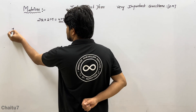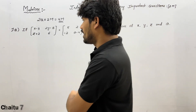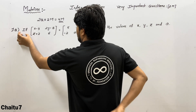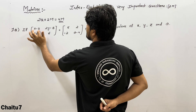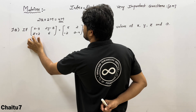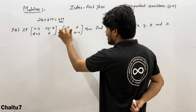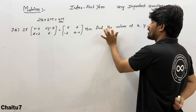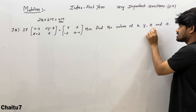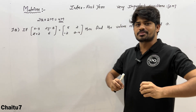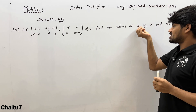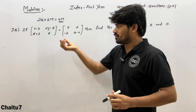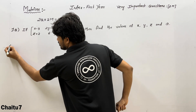Now we are going to the first question. It is a very very important question. If matrix [x−3, 2y−8; z+2, 6] is equal to the matrix [5, 2; −2, a−4], then find the value of x, y, z, and a. We need to find x, y, z, and a using the concept of equality of matrices. Let's go into the solution.